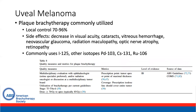Finally, we'll discuss uveal melanomas. Plaque brachytherapy is commonly utilized in the management of uveal melanomas with local control of 70 to 96 percent. Side effects include decrease in visual acuity, cataracts, vitreous hemorrhage, neovascular glaucoma, radiation maculopathy, optic nerve atrophy, and retinopathy. We most commonly use iodine-125 for these implants, but other isotopes can be used. With regards to quality measures and metrics, we recommend multidisciplinary evaluation with use of brachytherapy per current guidelines for stage T1 to T4. We typically recommend a dose of 70 Gy or more to the apex, typically overall 85 Gy, and the prescription point should be at the tumor apex or point of maximal thickness with the prescription isodose line covering the entire tumor. Thank you for listening to this discussion of the ABS Guidelines for Quality Measures and Metrics.